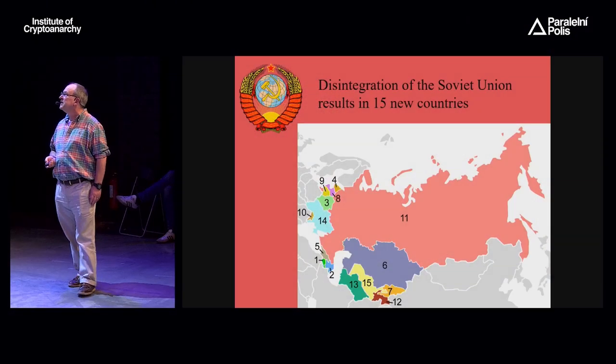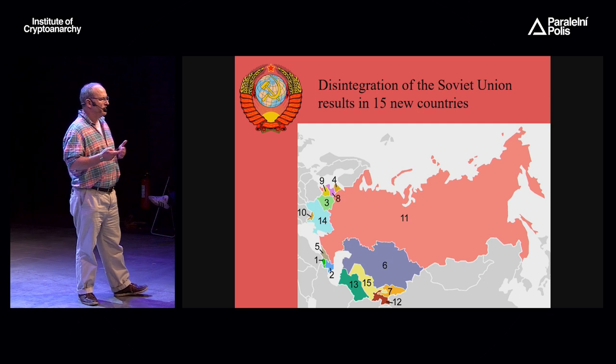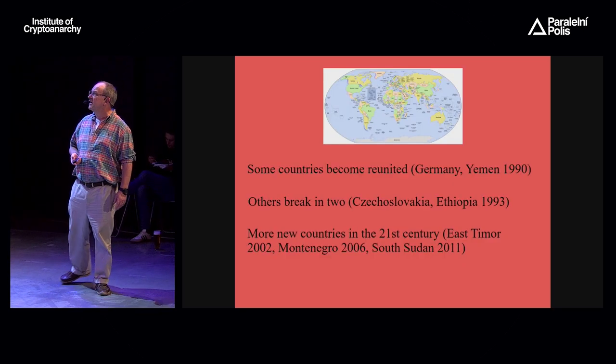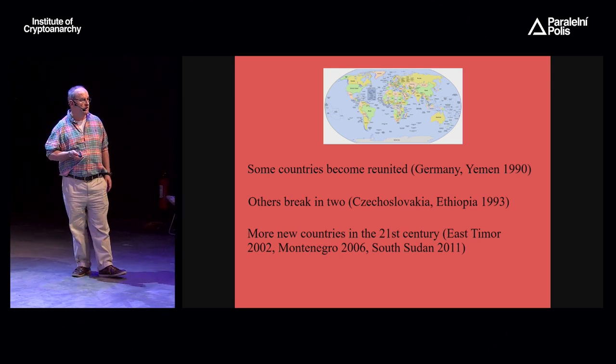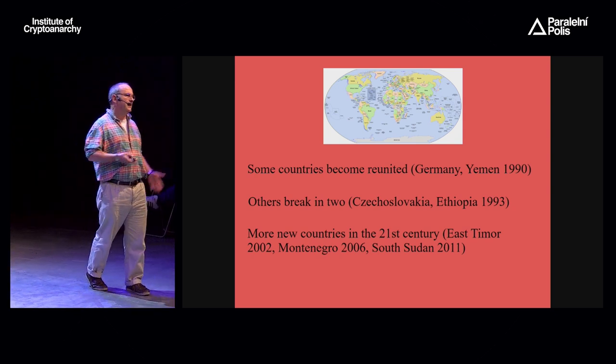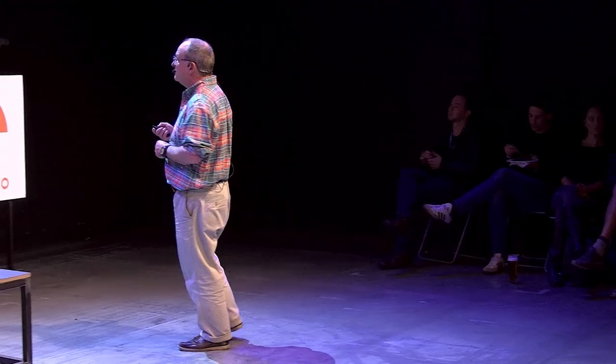This map is by no means static. In the last 30 years there's been quite a big series of changes. The end of the Soviet Union gave birth to 15 new countries. In the early 1990s some countries became reunited — Germany and Yemen in 1990. Three years later, Czechoslovakia became the Czech Republic as Slovakia split off. A similar thing happened in Ethiopia when Eritrea took over the portion on the Red Sea. And more new countries have appeared in the 21st century in Asia, Europe, and Africa.